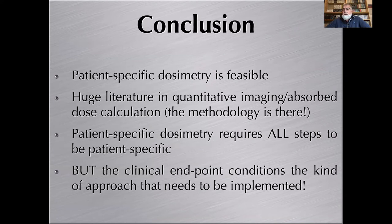As a conclusion, patient-specific dosimetry is feasible and is actually done in more and more clinical centers. There's a huge literature in quantitative imaging and absorbed dose calculation, meaning that the methodology is there. Patient-specific dosimetry requires all the steps to be patient-specific, and the clinical end point is going to condition the approach that needs to be implemented. That will be seen and discussed in the next lecture. This was the third of a series of five lectures on radiopharmaceutical dosimetry prepared under the IAEA Technical Cooperation Programme with project POLL 9025. Thank you.